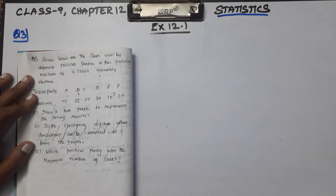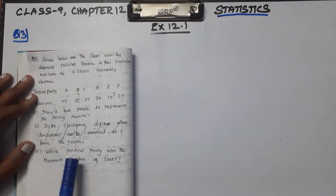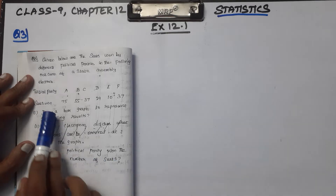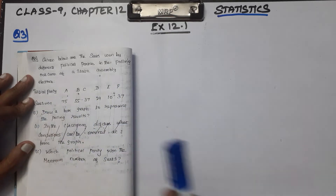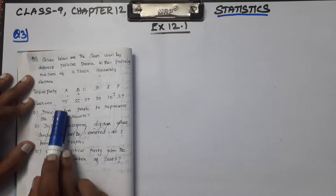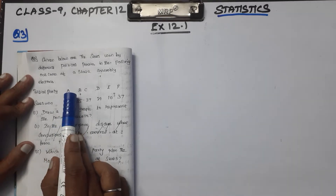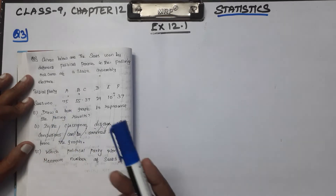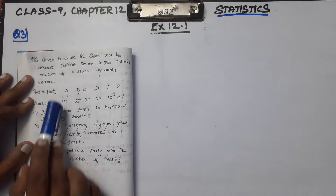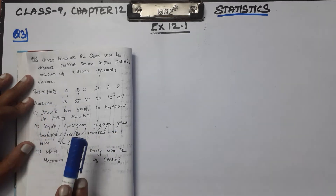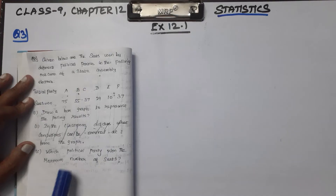Number 1: Draw a bar graph. Number 2: Which political party won the maximum number of seats? Looking at the data, party A has 75 seats, which is the maximum.